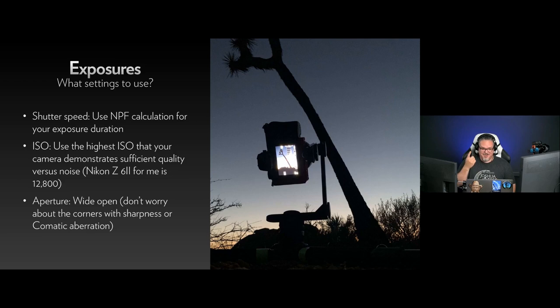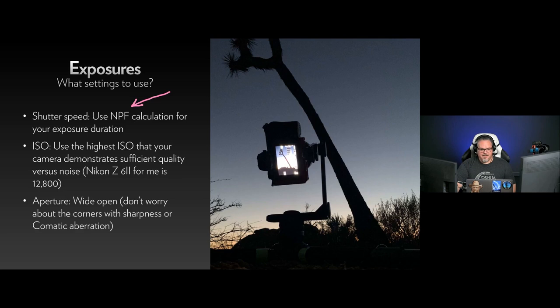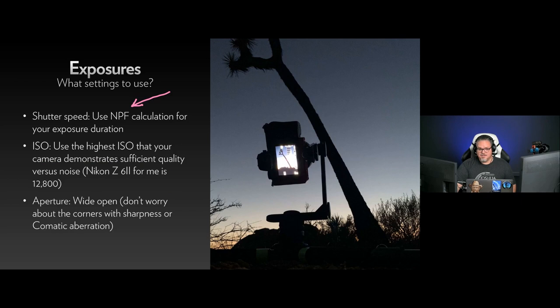There's only three things we've got to work on: shutter speed, ISO, and aperture. For shutter speed, I suggest the NPF calculation for your exposure duration — that will give you the sharpest stars. You can also use the 500 rule or the 400 rule, which we recommend at NPAN. The NPF calculation is designed to give you the longest allowable shutter duration. For ISO, use an ISO your camera demonstrates having sufficient quality at. During my last trip I was using ISO 12,800 way more than I ever have, because I was making a ton of panoramas — and it surprised me how good the quality was.